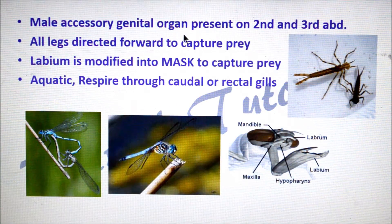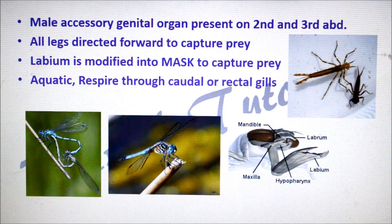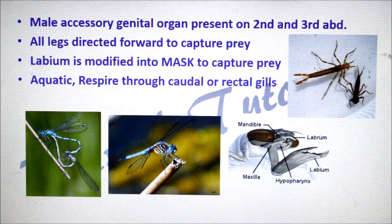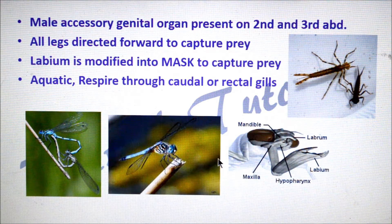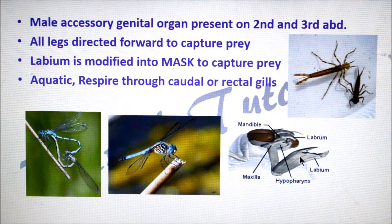Male accessory genital organ is present on the second and third abdominal segment. Legs are directed forward mainly to capture the prey, and immature stages are called as niads. In niads, the labium is modified into a mask to capture the prey.